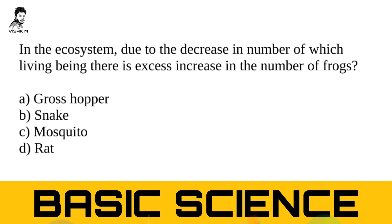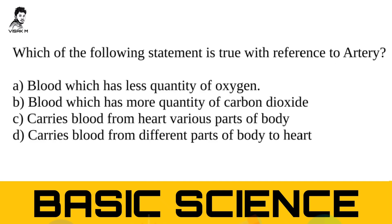Next question: in an ecosystem, due to the decrease in number of which living being is there an excess increase in the number of frogs? You have to memorize the flowchart of the food web. Option A: grasshopper. Option B: snake. Option C: mosquito. Option D: rat. The right answer is option B — snake. When the number of snakes decreases, the number of frogs increases. Connect that topic.